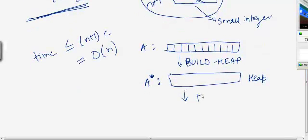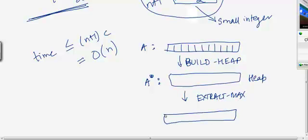And then you can do an extract max operation n times on it, and store the elements that you are extracting on the other end. And as a result what you will have is at the end you will have a sorted array in the same location.